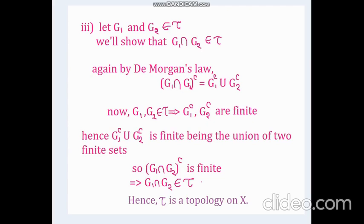Now we will prove that tau satisfies axiom number 3. For this, let g_1 and g_2 be any two sets in tau. We need to show their intersection also belongs to tau.